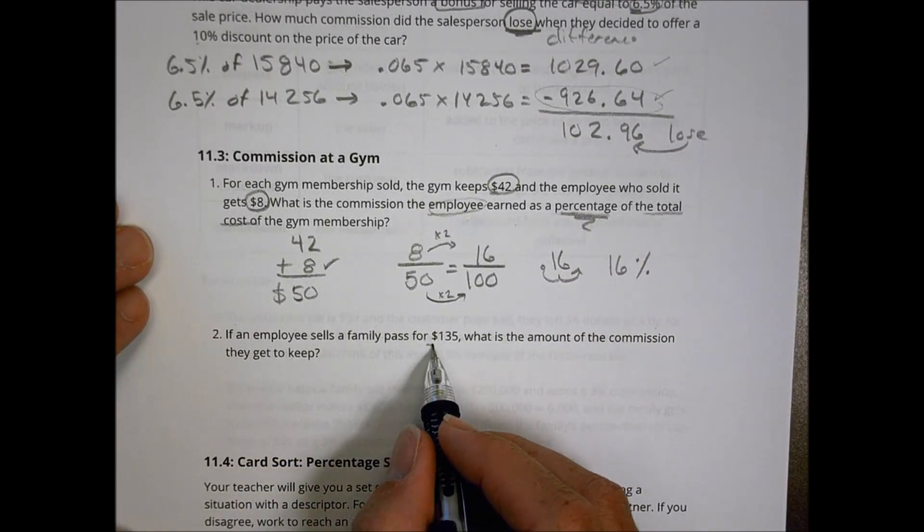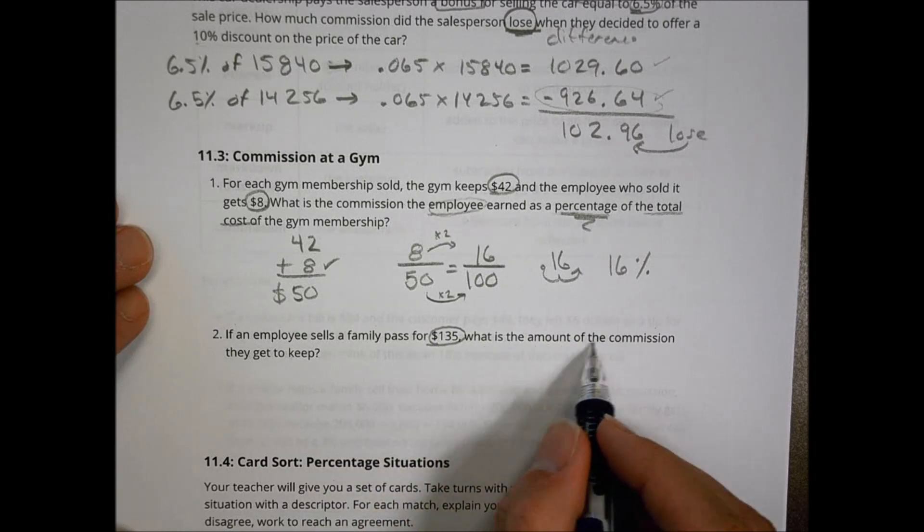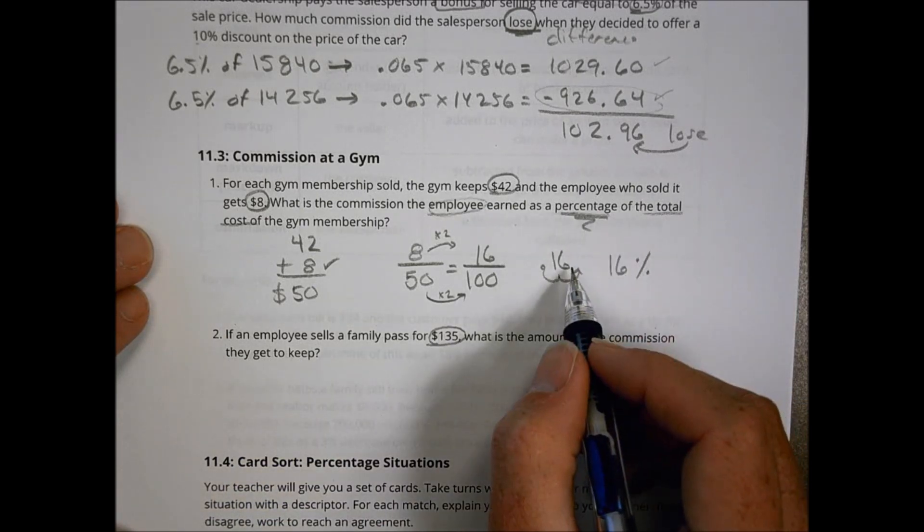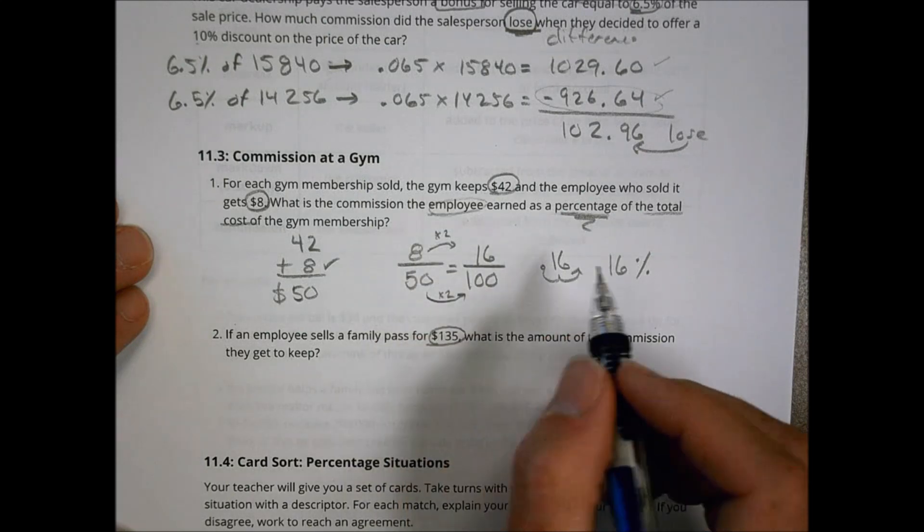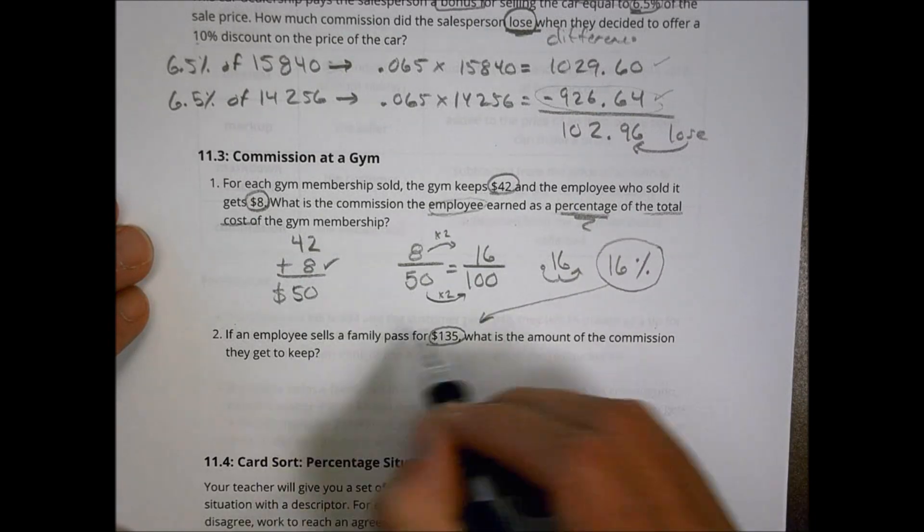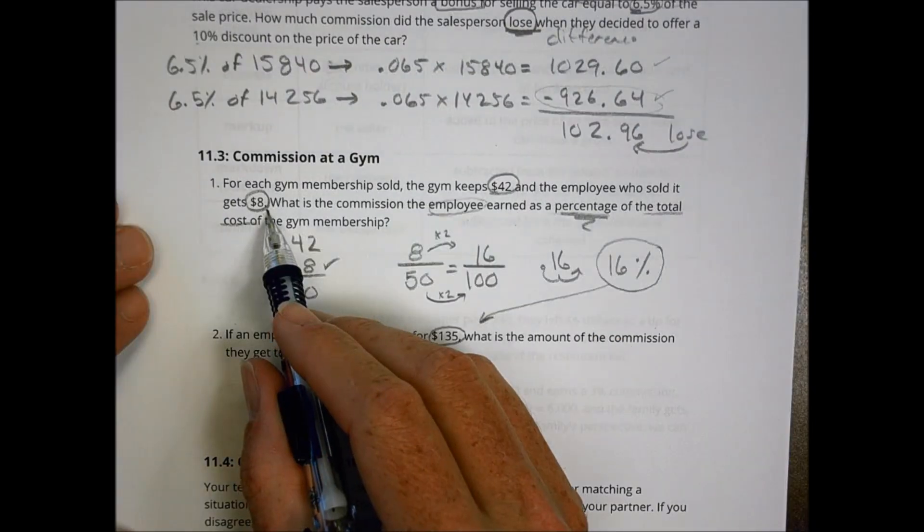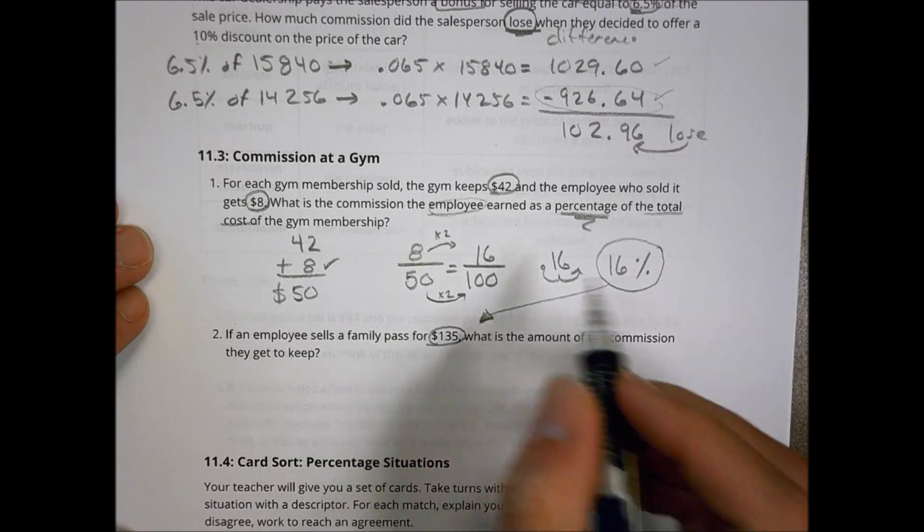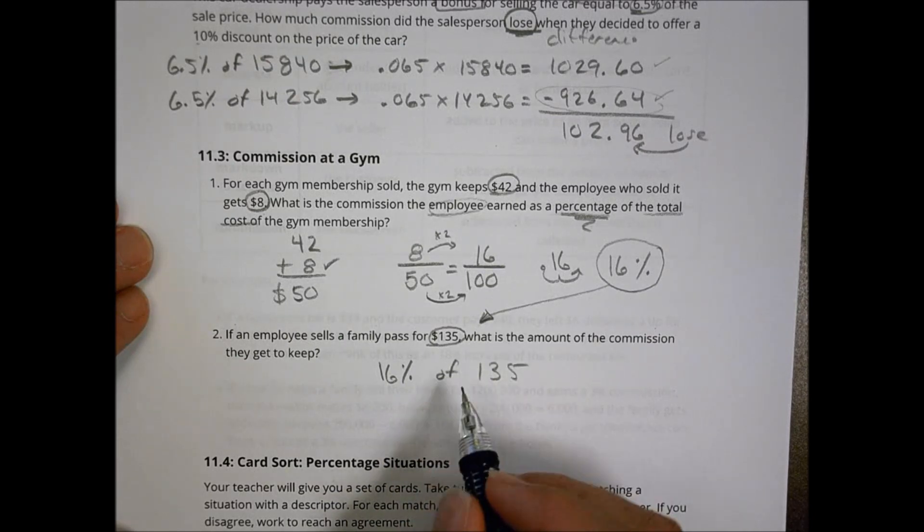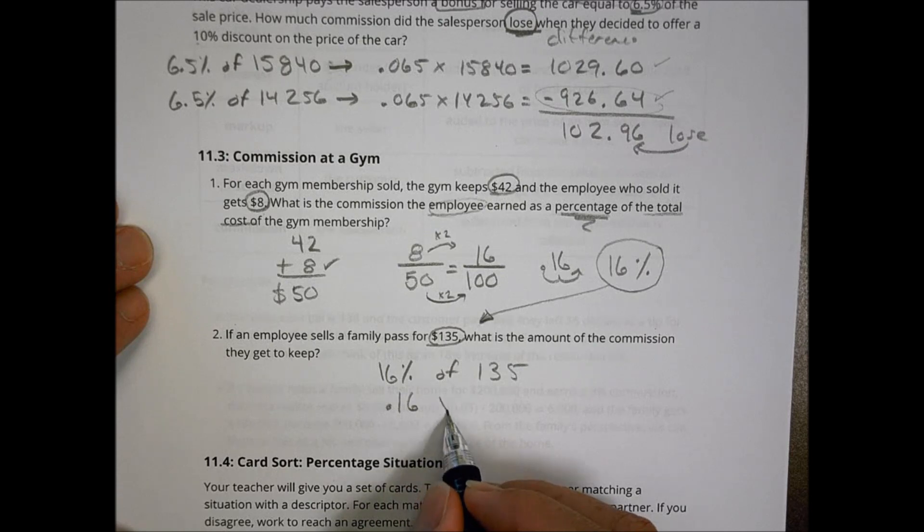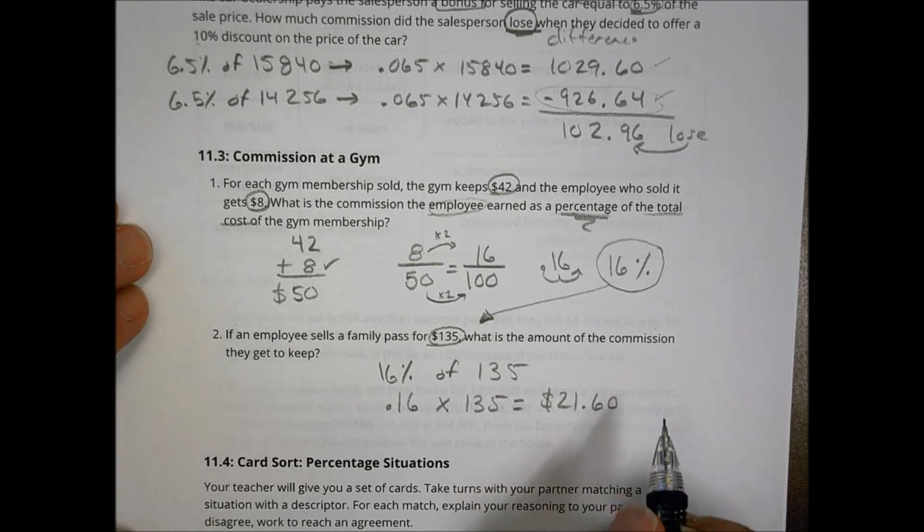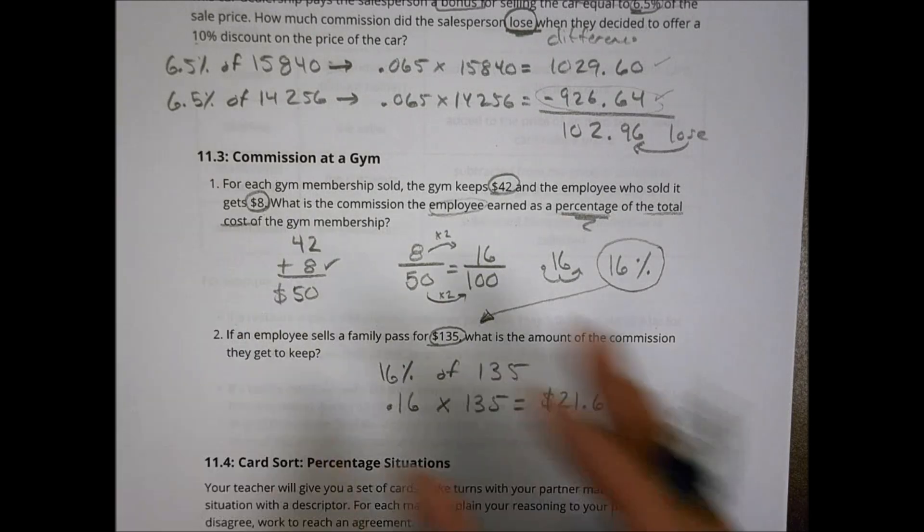If an employee sells a family pass for $135, what is the amount of commission they get to keep? That's a great question. Well, what we know is that they get 16% of whatever they're selling. So if they get 16% of the total, if that's going to be the same commission amount, it's not very clear if that's true because we know here they get $8 of every 50. This is a family pass. So let's assume that they're getting a 16% commission. So if they were to get 16% of $135, what would they get? And we turn that into a 0.16 times 135, and that's going to equal $21.60. And that's the idea for that third part there.